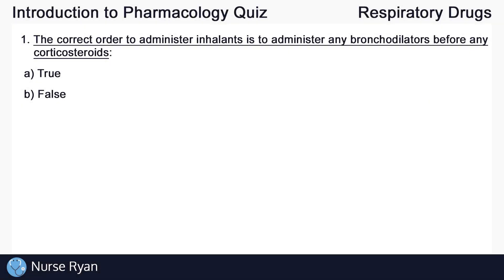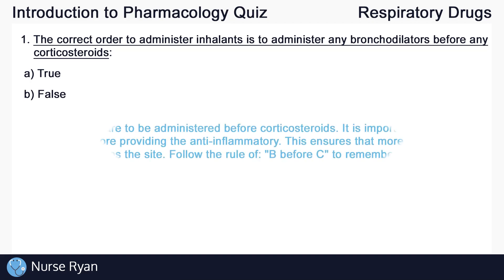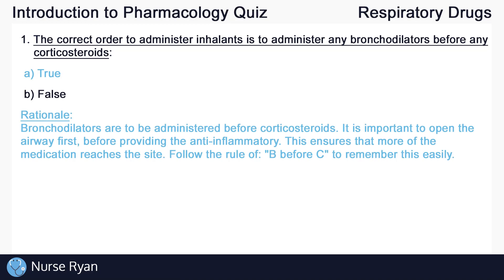Starting off with question number one. The correct order to administer inhalants is to administer any bronchodilators before any corticosteroids. And for each question, I'll leave a bit of a break where you can pause and think about the answer. The answer here is A, true.